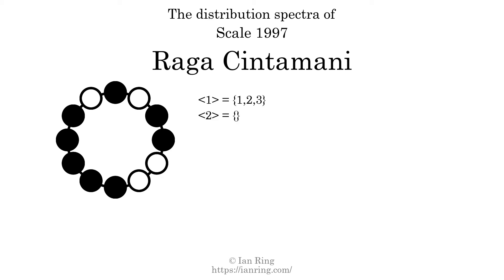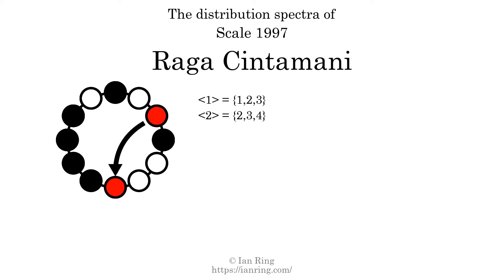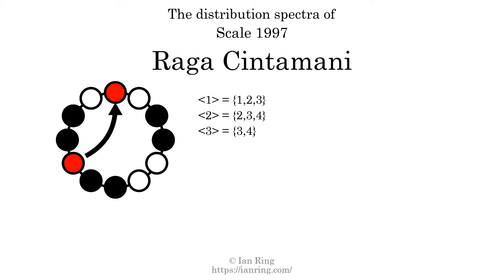The generic interval of 2 scale steps comes in 3 different specific interval sizes: 2 semitones, 3 semitones, and 4 semitones. The spectrum width of this generic interval is 2. The generic interval of 3 scale steps comes in 4 different specific interval sizes: 3, 4, 5, and 6 semitones. The spectrum width of this generic interval is 3.